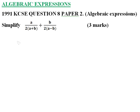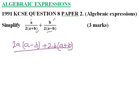To simplify this, we cross multiply. So we multiply this with a. We have 2a into bracket a minus b. We multiply 2a plus b by b. We have plus 2b into bracket a plus b.